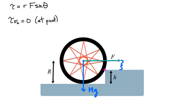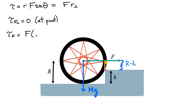For the applied force, if the full radius is r and the curb height is h, the remaining vertical distance from the curb edge to the center of the wheel is r minus h. The shortest distance from the pivot to the line of action of the horizontal force is simply r minus h, which makes a right angle with the force. So the torque due to the applied force F is simply F times (r minus h), and this torque acts in the clockwise direction.